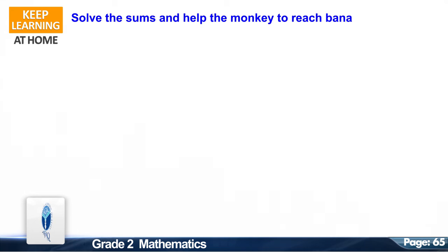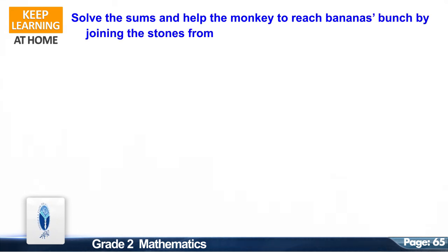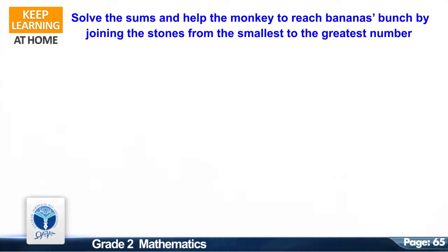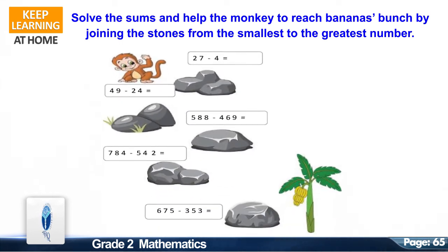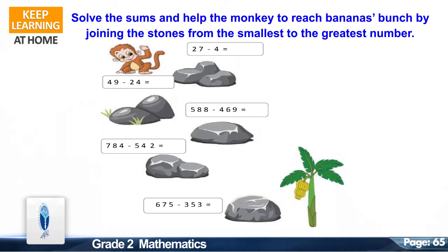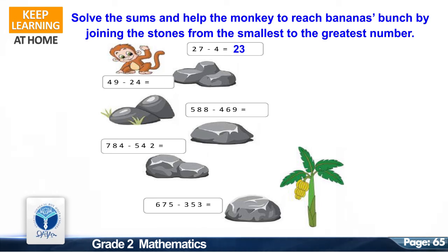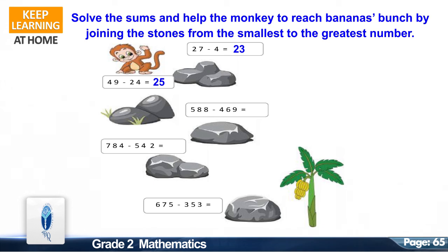Solve the sums and help the monkey to reach the bananas bunch by joining the stones from the smallest to the greatest number. Let's start. 27 minus 4 — it is 23. Now solve 49 minus 24 — it is 25. Now solve 588 minus 469 — it is 119.